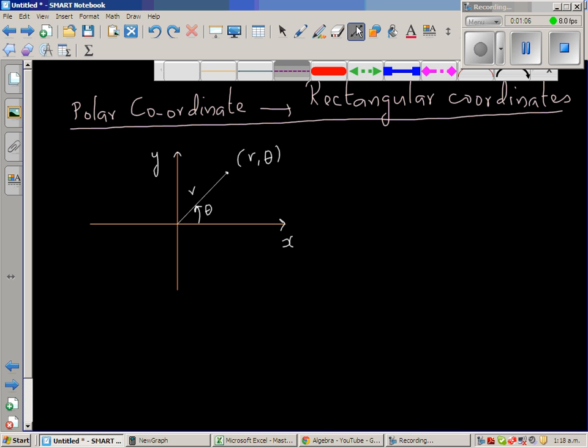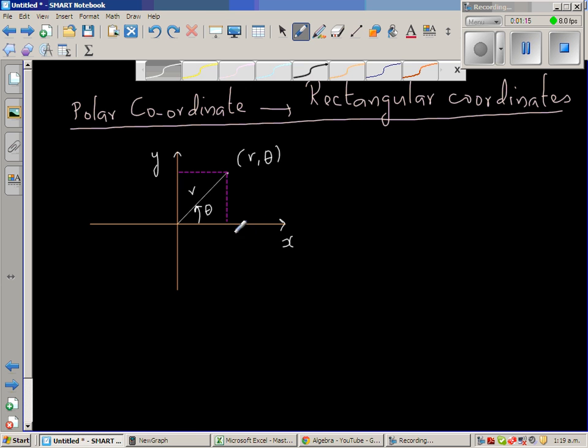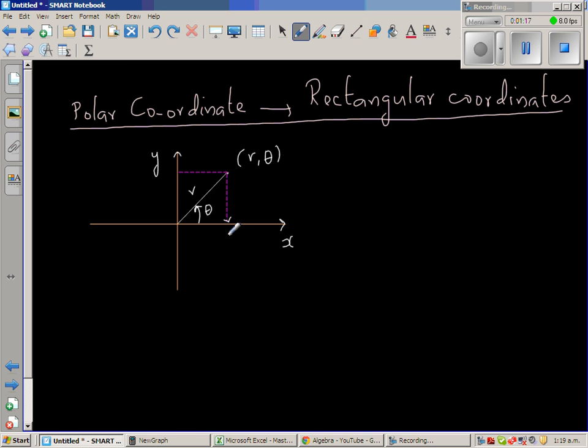So this is a dotted line which corresponds to x-axis and y-axis. So this point, say, corresponds to a on the x-axis and b on the y-axis.